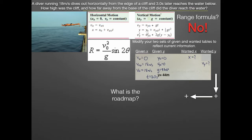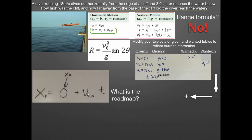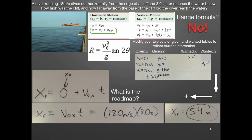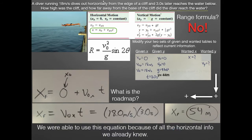To find x_final, we use the horizontal kinematic equation: x_final = x₀ + v_{x0}·t. We know x₀ = 0, v_{x0} = 18 m/s, and t = 3 s, so x_final = 18 × 3 = 54 meters. That's how far from the edge he lands. We already had all that horizontal information, which made Part B straightforward.